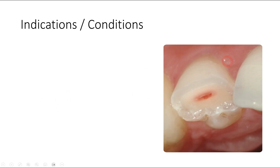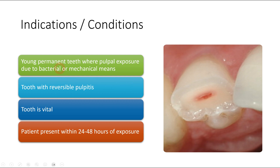In this clinical picture, you can see a tooth with some pulpal exposure. In order to perform Svex pulpotomy: firstly, there should be young permanent teeth where there is pulpal exposure either due to bacterial or mechanical reason; secondly, the tooth should have reversible pulpitis; thirdly, the tooth should be vital, because in cases of necrotic pulp we have to go for root canal treatment or pulpectomy; and lastly, the time from pulpal exposure until the visit to the dentist should be between 24 to 48 hours.